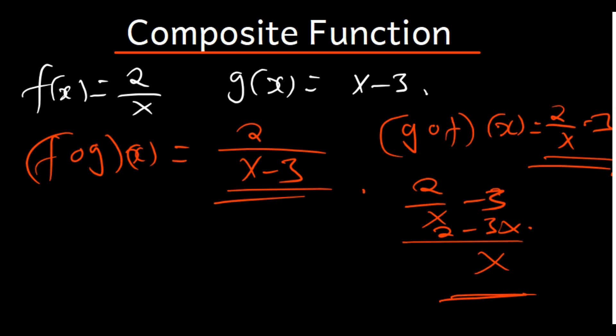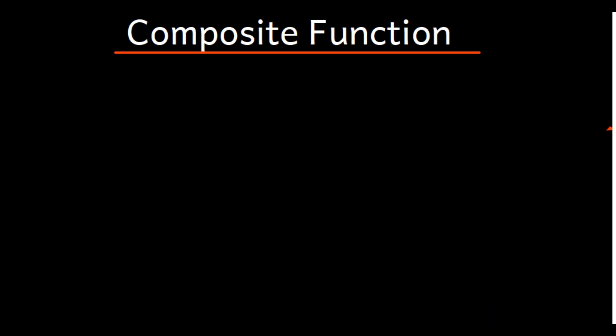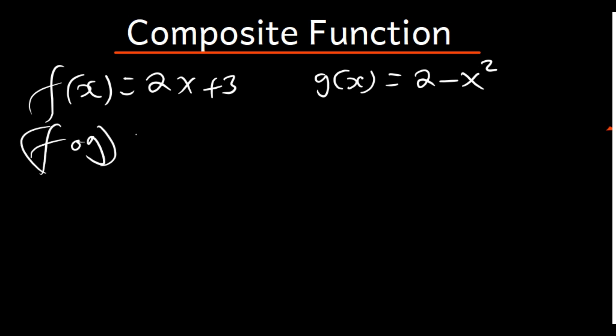Let's have another question with two functions: f(x) = 2x + 3 and g(x) = 2 - x². Now if they ask us to find f of g of 0, what it means is that we first find f of g of x, and then where there is x we replace it with 0 and find the value.